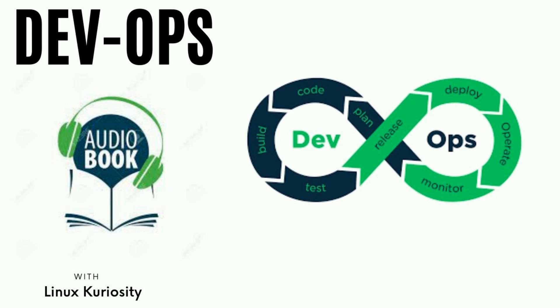First question is: what is backlog? A backlog is a list of the outstanding user stories, bugs, and features for a product or sprint.